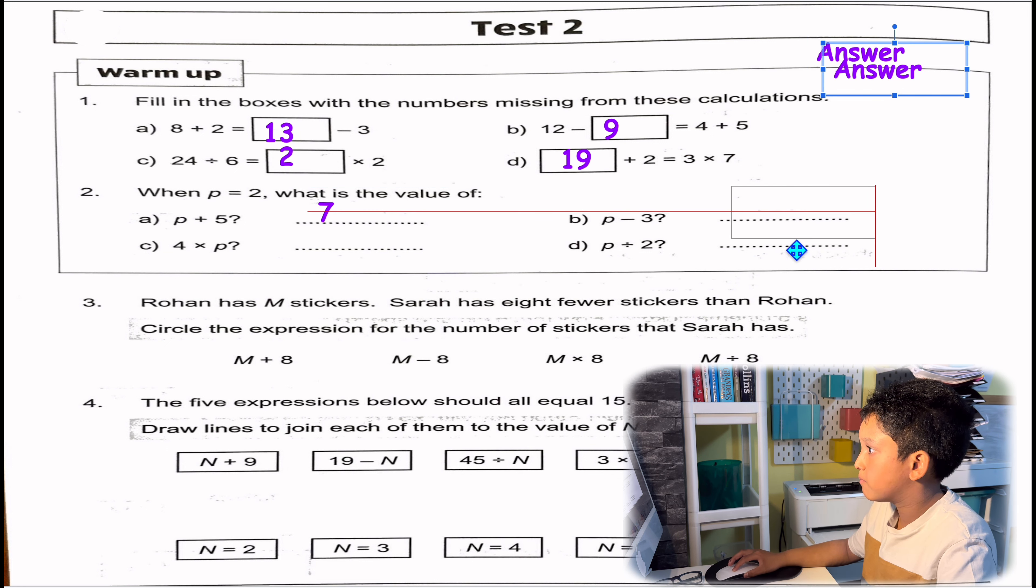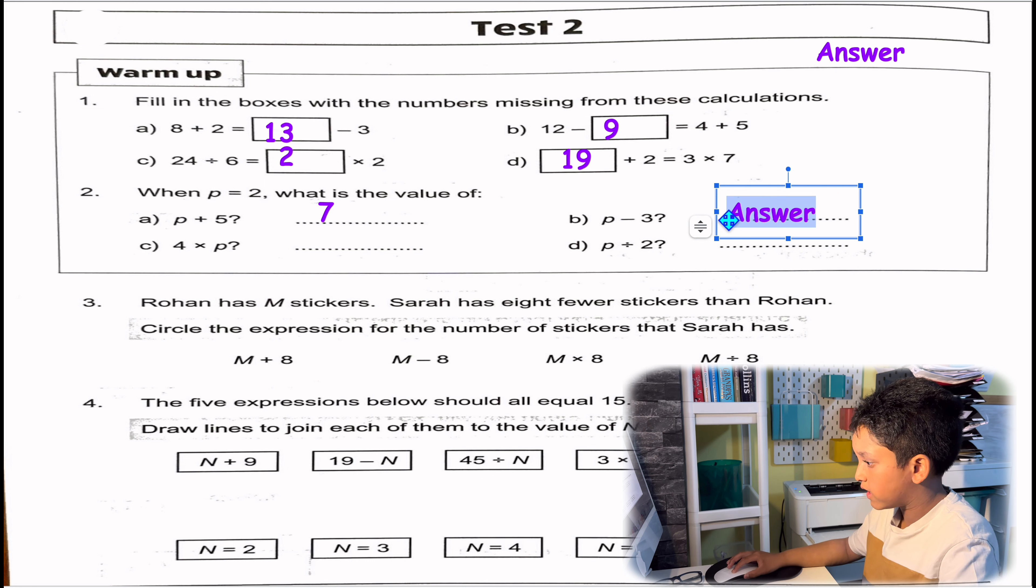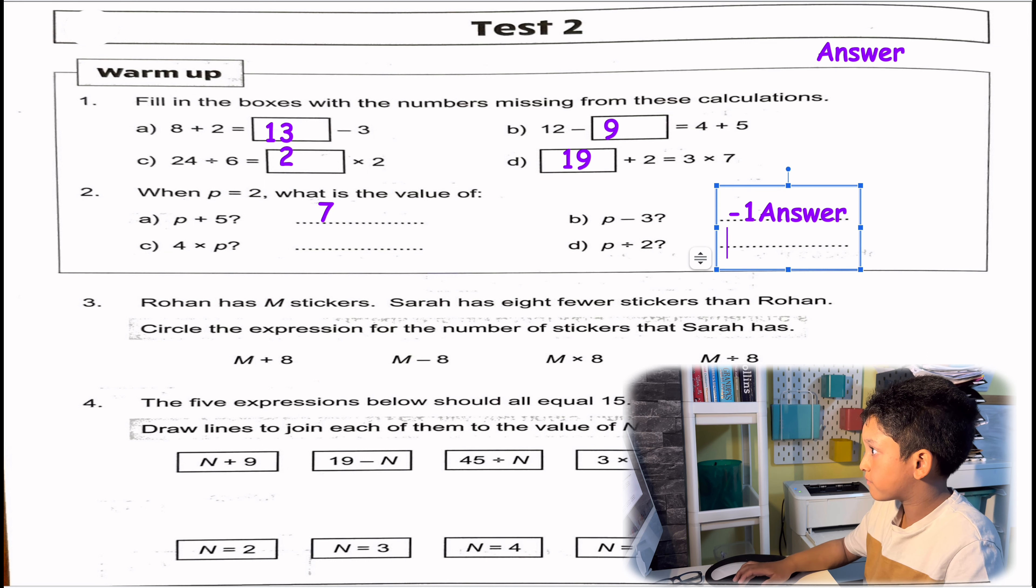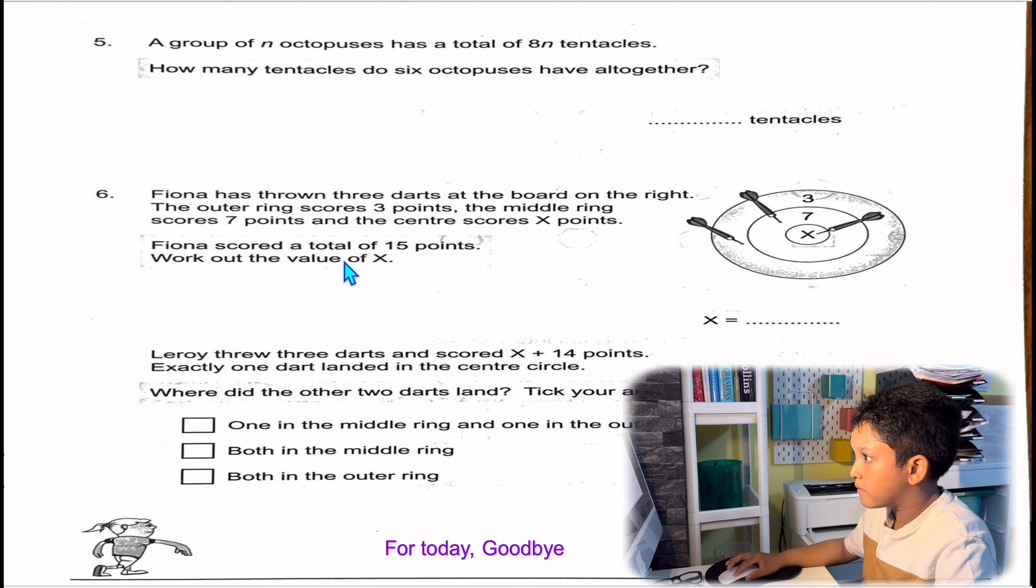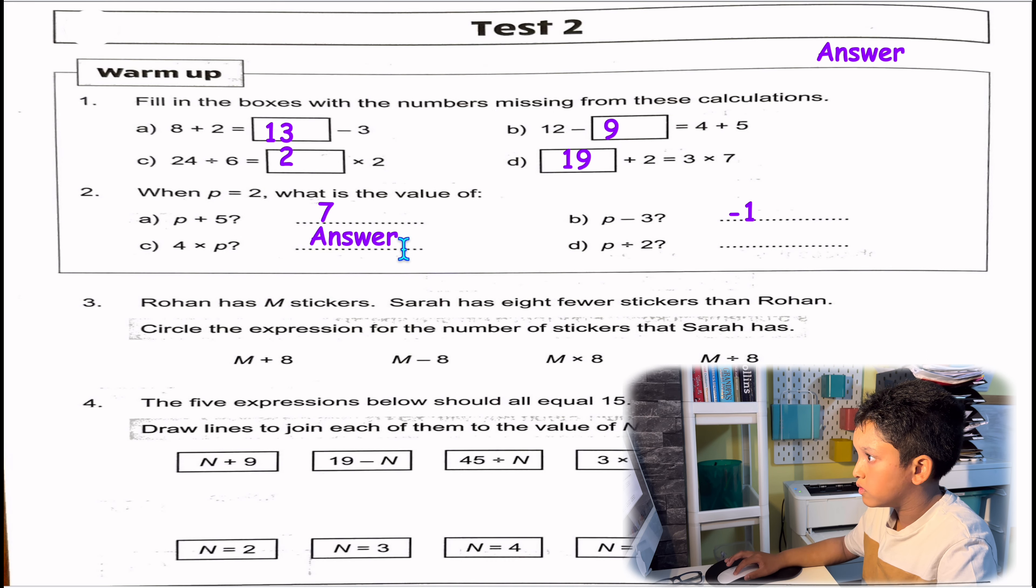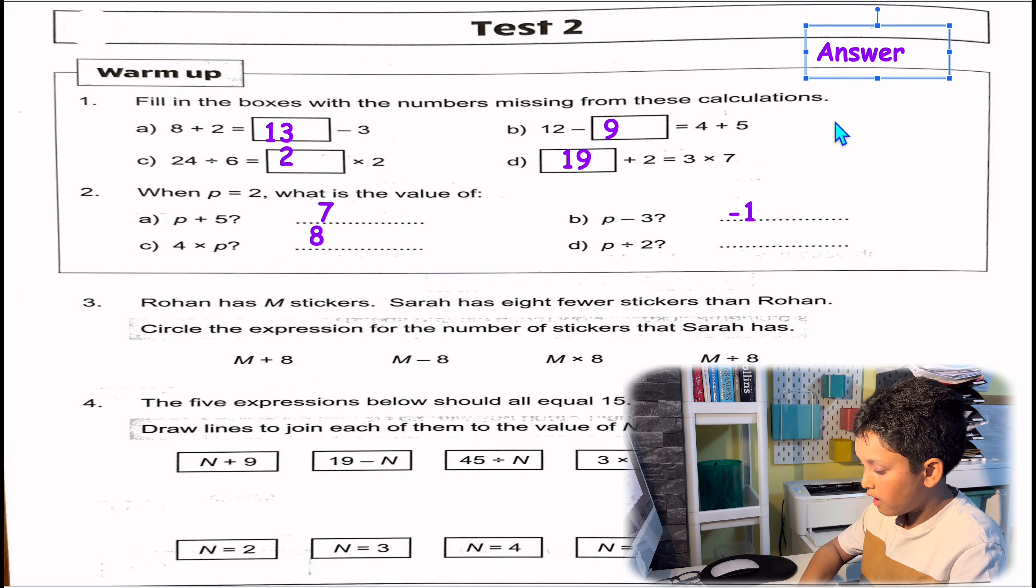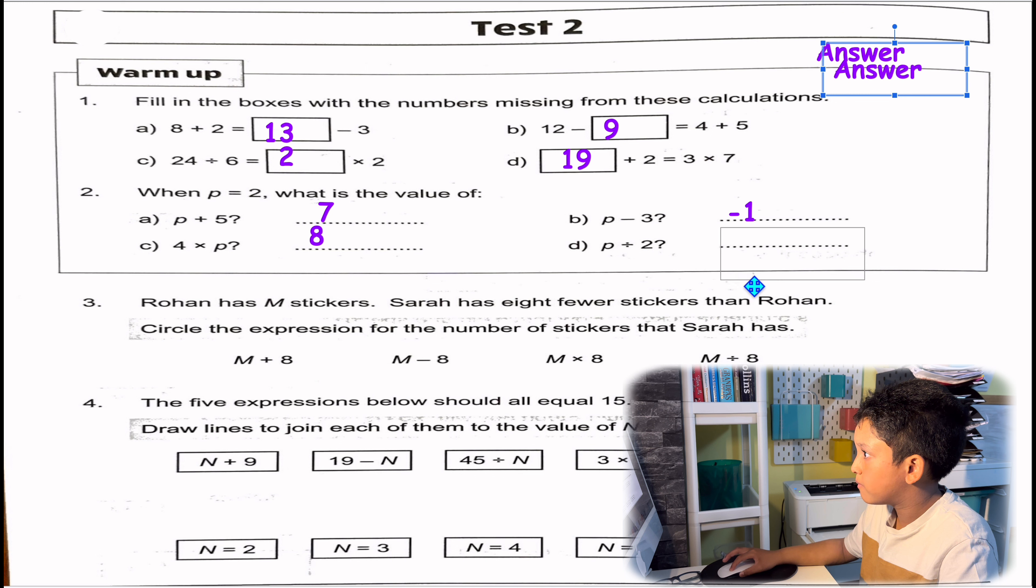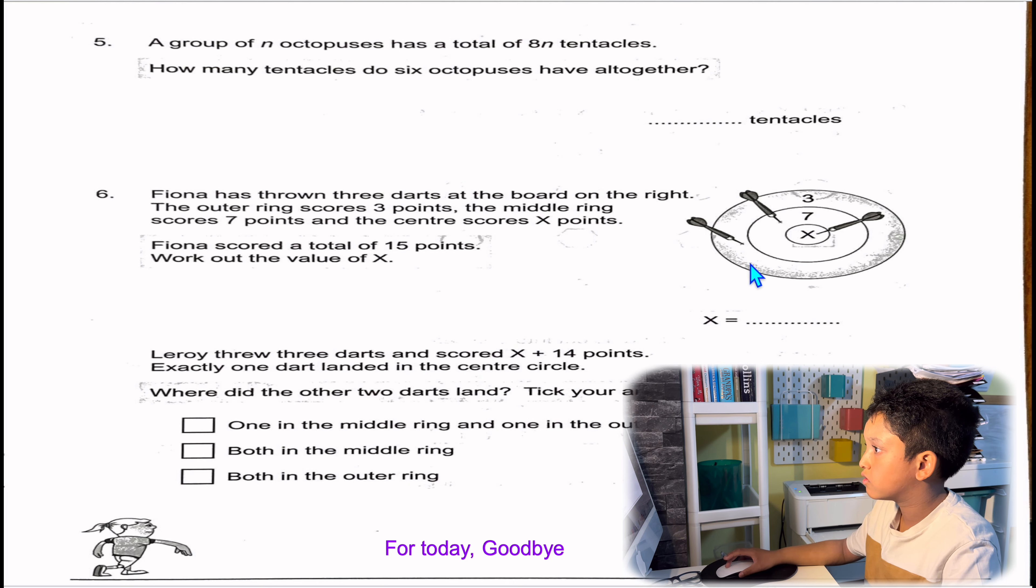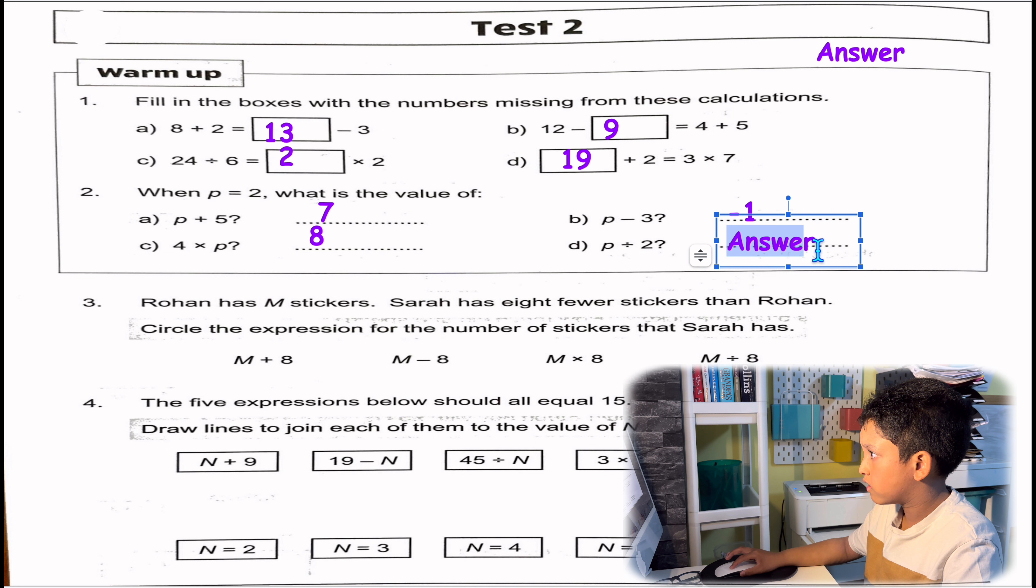So B: P take away 3, which is 2 take away 3, negative 1. 4 times P, which is also 4 times 2 is 8. And finally, P divided by 2 or 2 divided by 2 is 1.